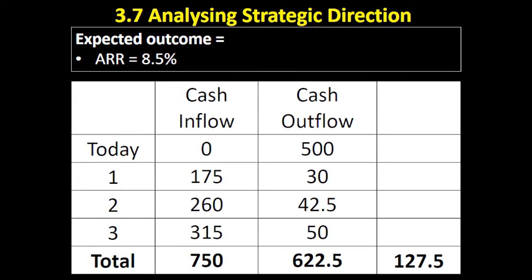So we've been using these figures: a project that initially cost £500 million, with total revenues predicted to be £750 million against outflows of £622.5 million. Therefore the investment is expected to be profitable over its lifetime. To calculate the average rate of return, we divide the total profit by three years and then divide that figure by the initial cost of the project, giving us an average rate of return of 8.5%. So management would be reasonably happy to go ahead with this project.